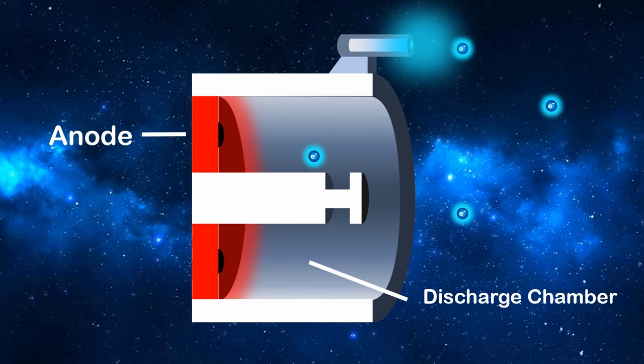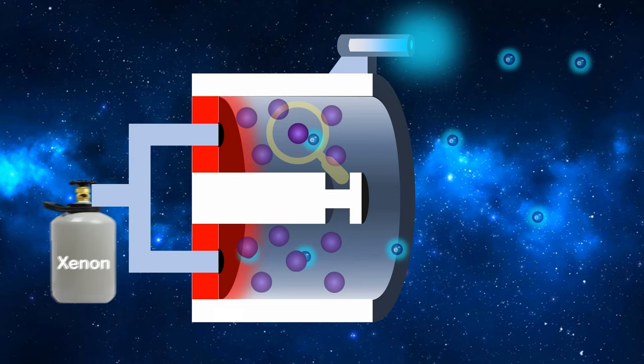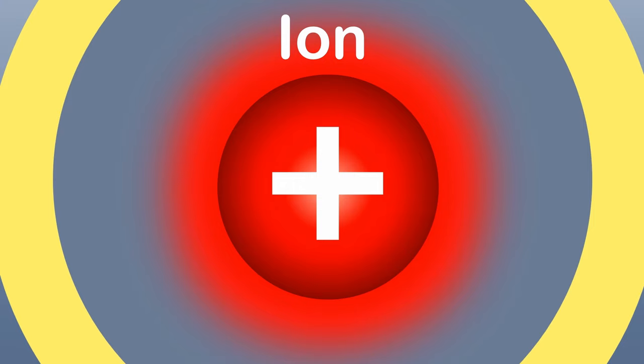The electrons then hit the xenon atoms so hard that it knocks off an electron. The xenon atoms have become positive xenon ions. But how can we increase the number of ions produced?